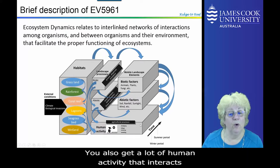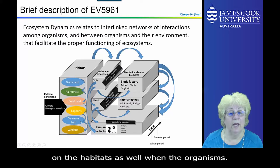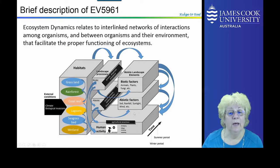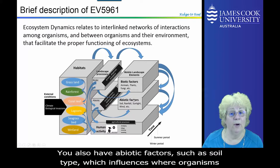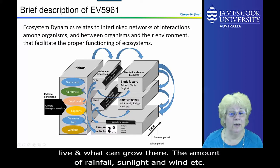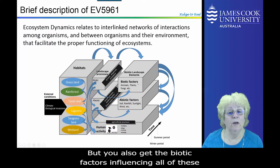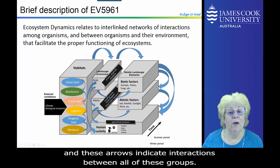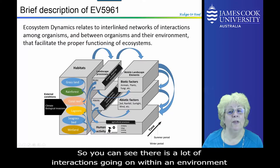You also get a lot of human activity that interacts on the habitats and the organisms. You also have abiotic factors such as soil type, which influences where organisms can live and what can grow there, the amount of rainfall, sunlight, wind, etc. You also get all of the biotic factors influencing all of these. These arrows indicate interactions between all of these groups — you can see there are a lot of interactions going on within an environment.